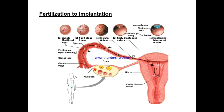Let's go back to the beginning and look at fertilization to implantation. As ovulation occurs, the oocyte egg travels up the uterine tube, at which point it may or may not be fertilized with the sperm. In the case of fertilization, the sperm and egg meet — this is the first stage, which is the zygote, the fertilized egg. As we continue to travel down, we have the four-cell stage two days later, then three days later a morula, and then four days, an early blastocyst with a visible blastocyst cavity.